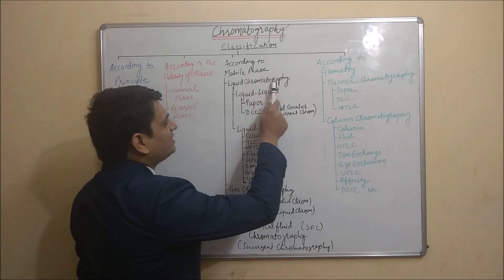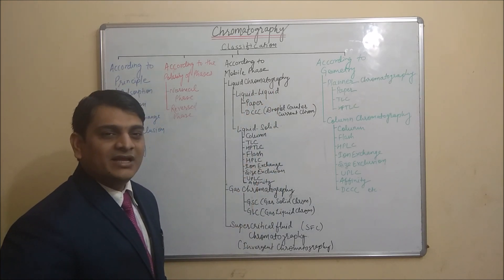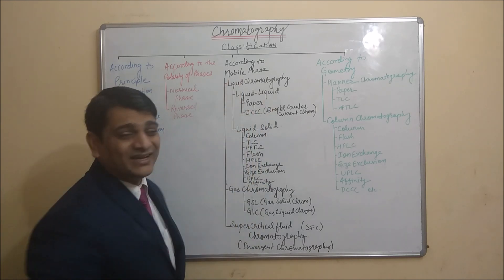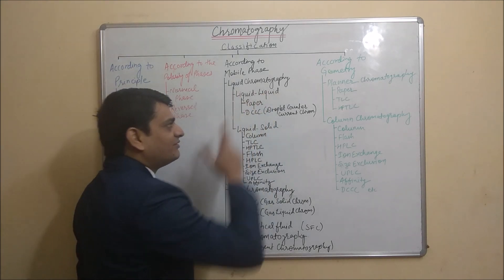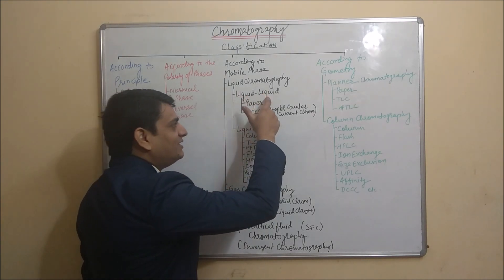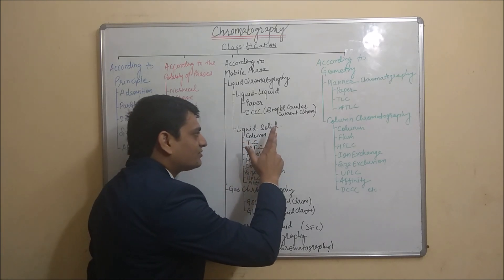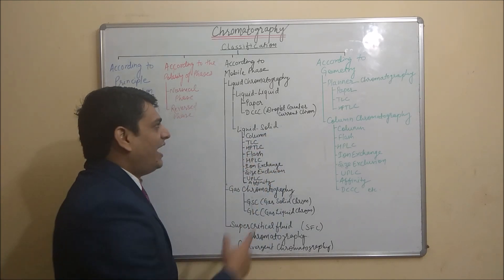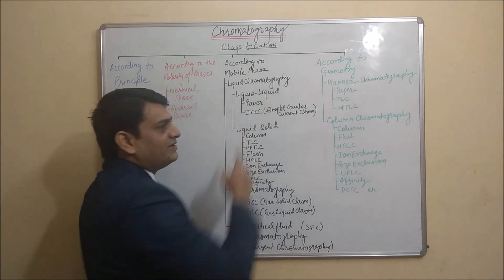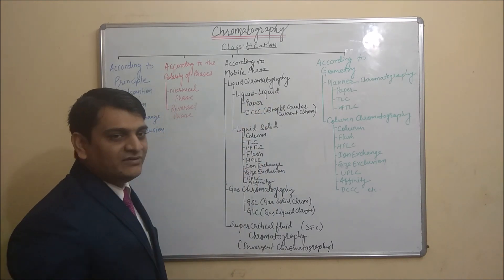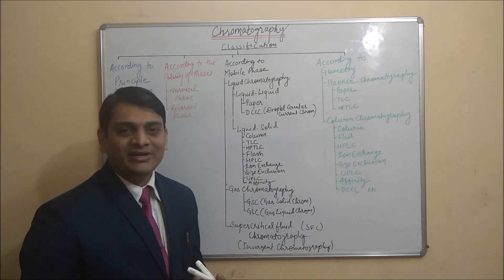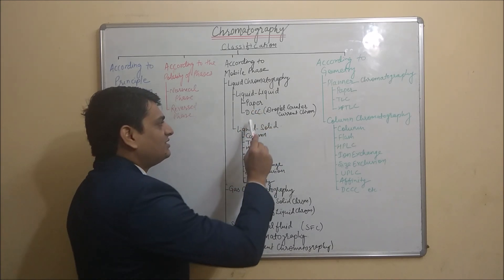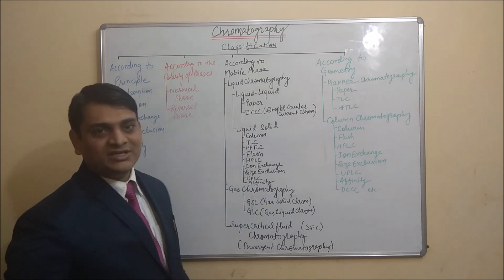Liquid chromatography is divided into two categories: liquid-liquid chromatography (liquid mobile phase and liquid stationary phase) and liquid-solid chromatography. In liquid-liquid chromatography, the principle is partition chromatography. Under this category, the first type is paper chromatography and the second is droplet counter-current chromatography (DCCC).